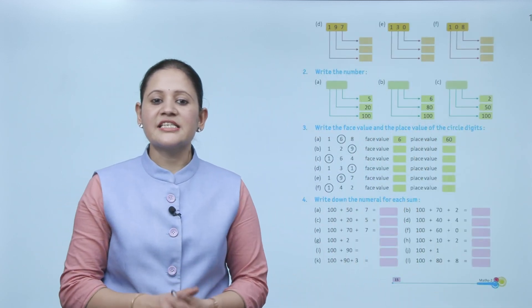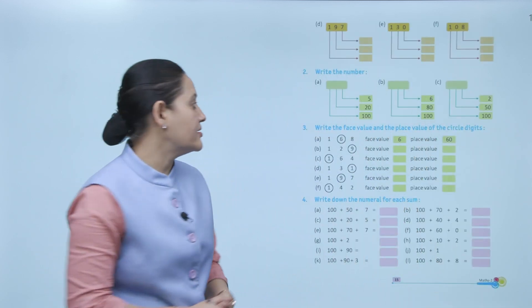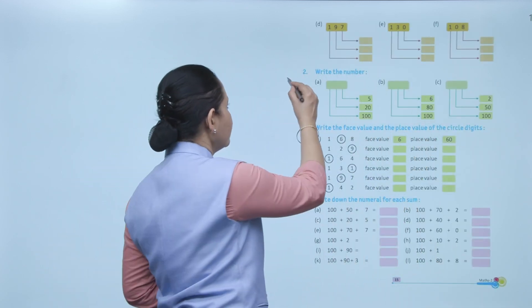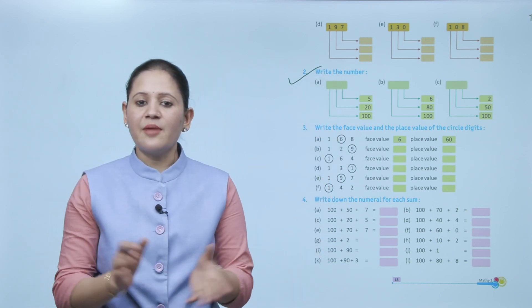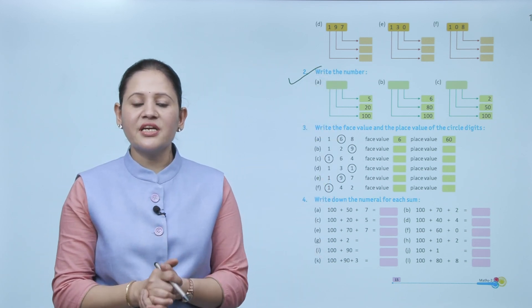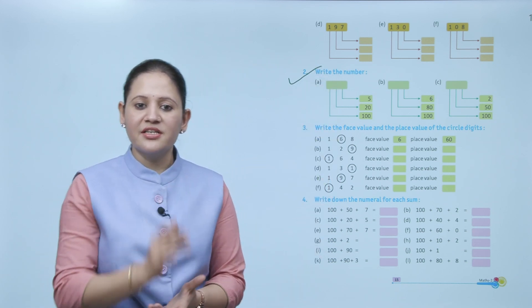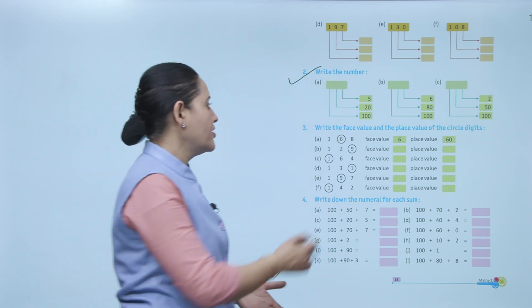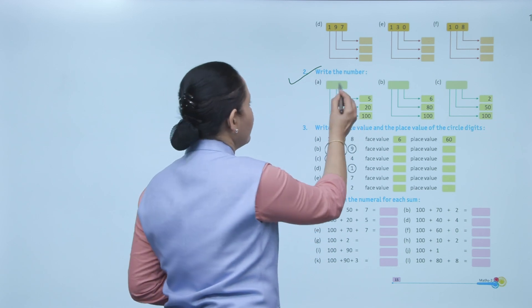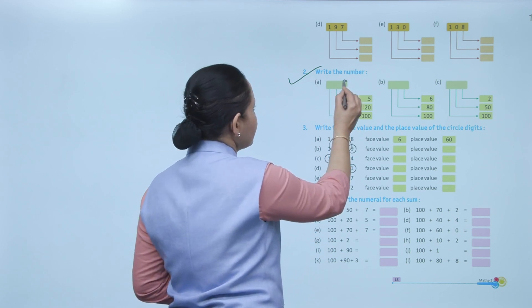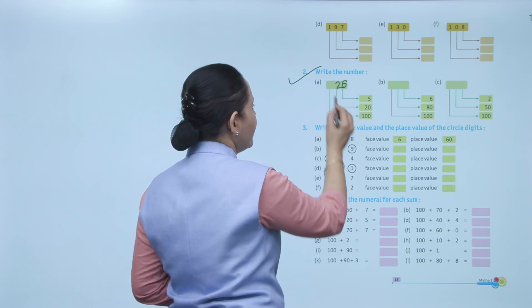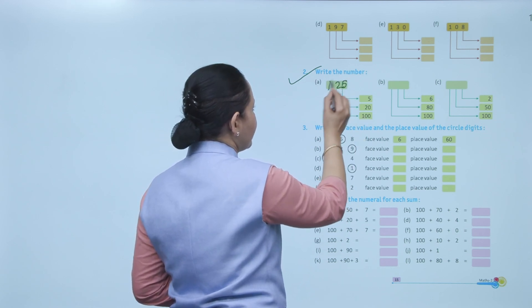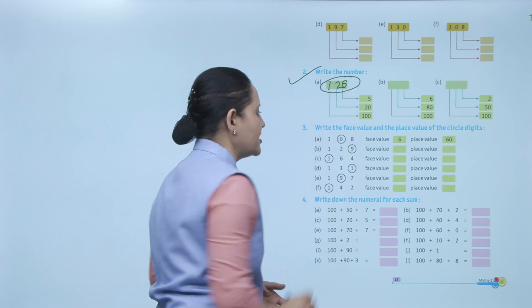Next: write the number. Ones place: 5; tens place: 2; hundreds place: 1. So the number is 125.